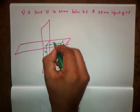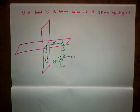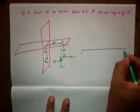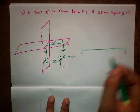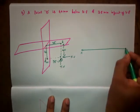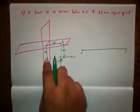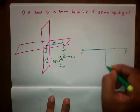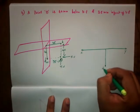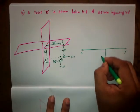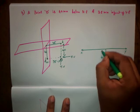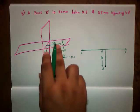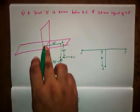Let us take this one as 35 mm. Now let us draw the x-y reference line. On the vertical plane we have D dash, that is 40 mm below. So we have D dash, which is at a distance of 40 mm below. And we have small d on HP, which is at a distance of 35 mm from the x-y reference line.